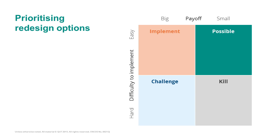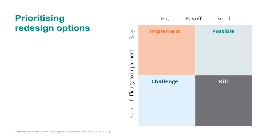Finally there is the kill quadrant, where we put options that are at the same time hard to implement and have a small payoff. These are probably issues we should not be considering.